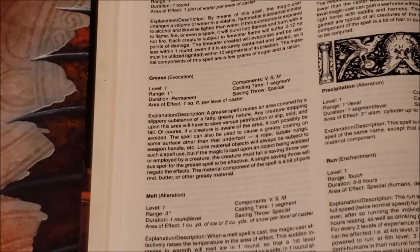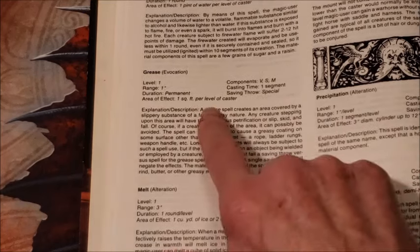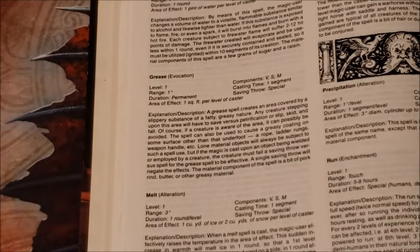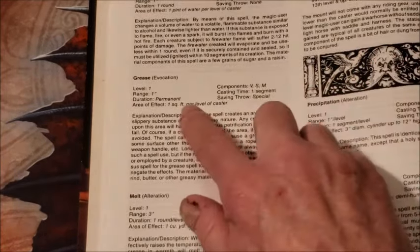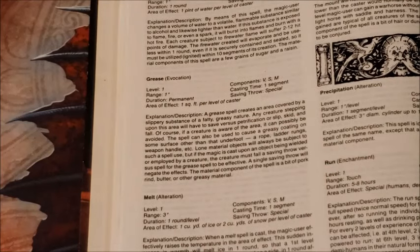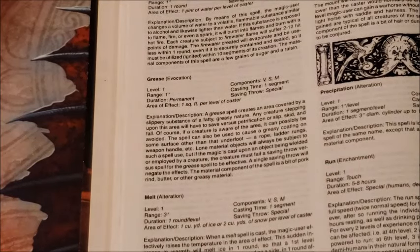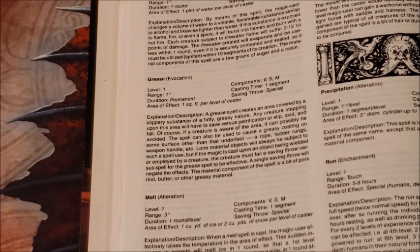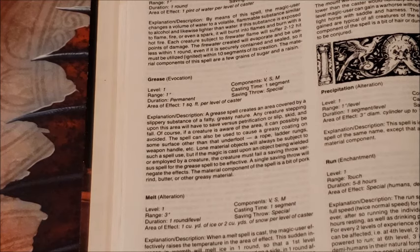We misread it at first. It obviously says one square foot per level of caster. We read that as 10 for some reason, so for probably the first two games this was used, we had a third level MU throwing it 30 feet by 30 feet, and we're going, 'Oh my gosh, what a ridiculously powerful spell!' And then one of us read the book and went, 'Hey guys, it's not 30 by 30, it's three by three.'